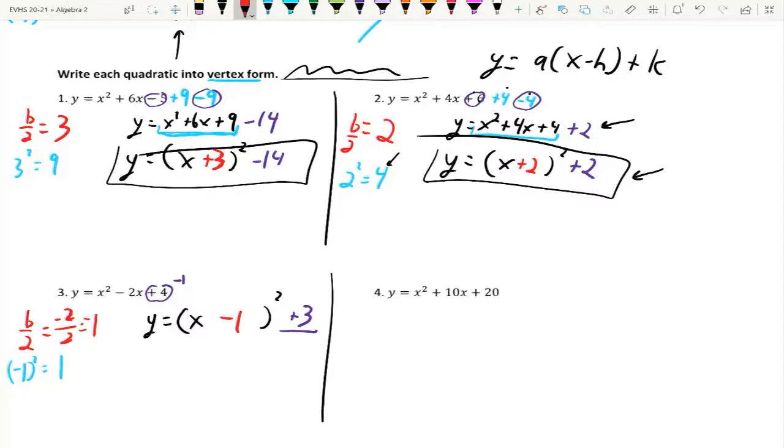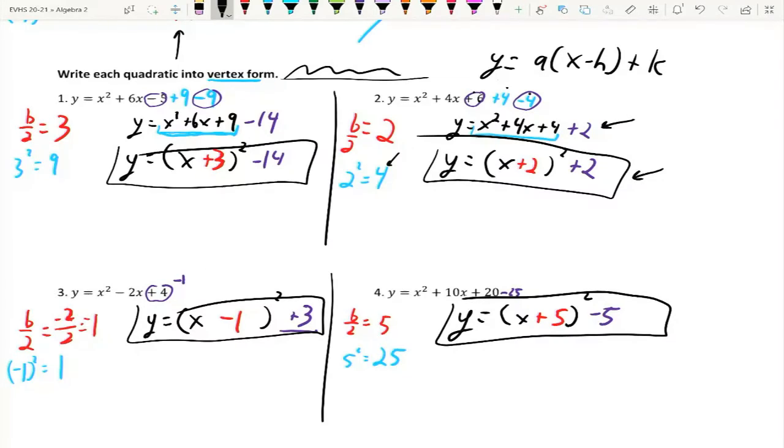Now, let's do our b over 2. 10 divided by 2 is 5. And 5² is 25. So, this ends up becoming y = (x + 5)². And then again, we have the 20 minus 25 over here. And so, that becomes 20 minus 25 is -5. And again, if you don't like going straight to that form, you can always write it out like we did on the first 2.